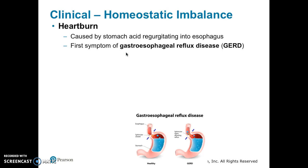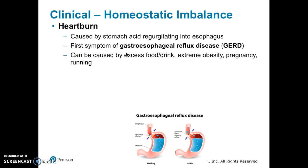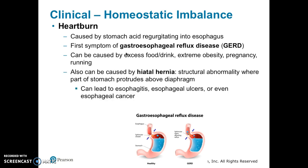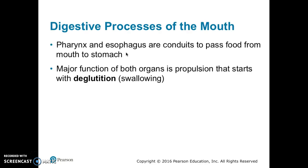Heartburn is caused by stomach acid regurgitating into the esophagus and is the first symptom of GERD, or gastroesophageal reflux disease. Heartburn can be caused by excess food or drink, extreme obesity, pregnancy, or running. It can also be caused by a hiatal hernia, which is a structural abnormality where part of the stomach protrudes above the diaphragm. A hiatal hernia can also lead to esophagitis, esophageal ulcer, or even esophageal cancer.